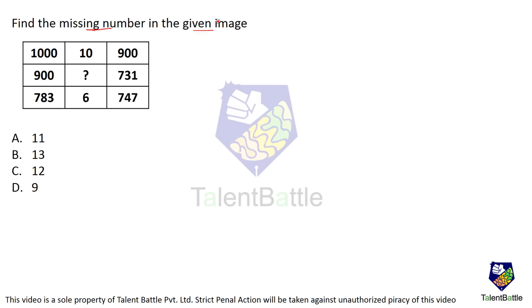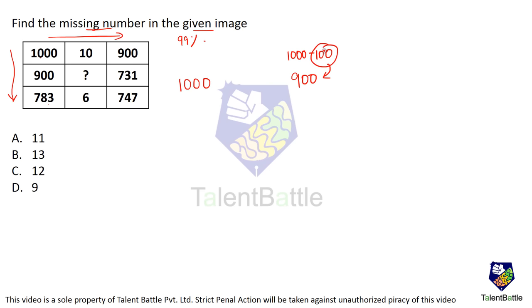Find the missing number in the given image: 10, 10, 900, 900, question mark, 731, 783, 6747. Whenever such an image is given, the relation is either horizontal or vertical. Here, 1000 minus 100 gives 900, and 100 is 10 squared — the middle number. So the pattern is: outer number minus (middle number squared) equals the other number.